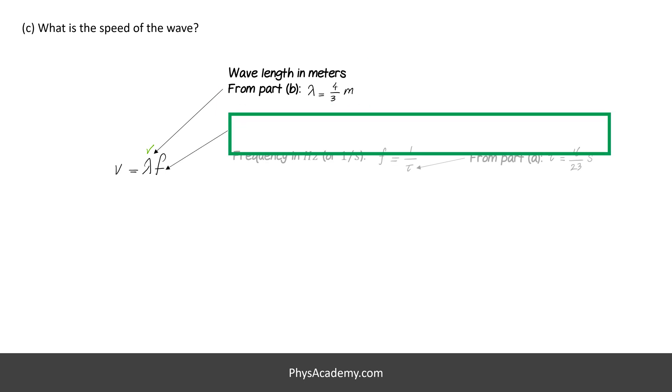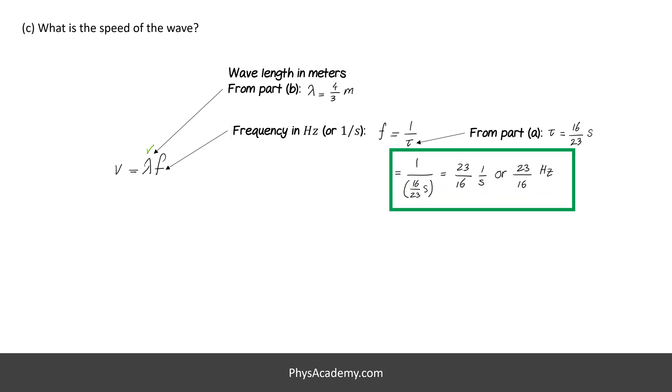In part C, we are asked to calculate the speed of the propagation of the wave. To do so, we start with speed equals the wavelength times frequency relationship. From part B, we found the wavelength equals 4 meters divided by 3. We don't have the frequency of the oscillations yet, but we know frequency is the invert of the period, and from part A, we know period or tau is 16 seconds divided by 23. Plugging the numbers in, we get 23 hertz divided by 16 for the frequency of the oscillations. Remember, hertz is the short way of saying inverted seconds. Now we can go back and plug this frequency into the original equation for the speed, and we get about 1.92 meters per second for the speed of the propagation of the wave.